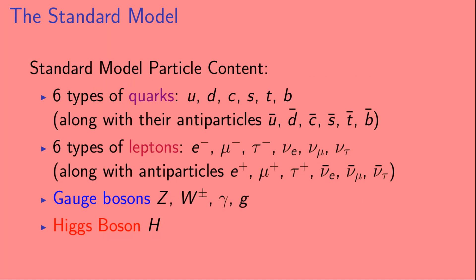Let's briefly review the particle content of the standard model. The standard model has six types of quarks: the up, down, charm, strange, top, and bottom. Each one of those quarks has an antiparticle, denoted with the same letter but with a bar on top. There are also six types of leptons: the electron, the muon, the tau, and their three neutrinos — the electron neutrino, the muon neutrino, and the tau neutrino. Each lepton also has an antiparticle; in the case of the electron, its antiparticle the E-plus is also called the positron. Anti-neutrinos are denoted with a bar over them. There are also the gauge bosons: the Z, the W-plus and minus, the photon, and the gluons. And finally, there's the Higgs boson.